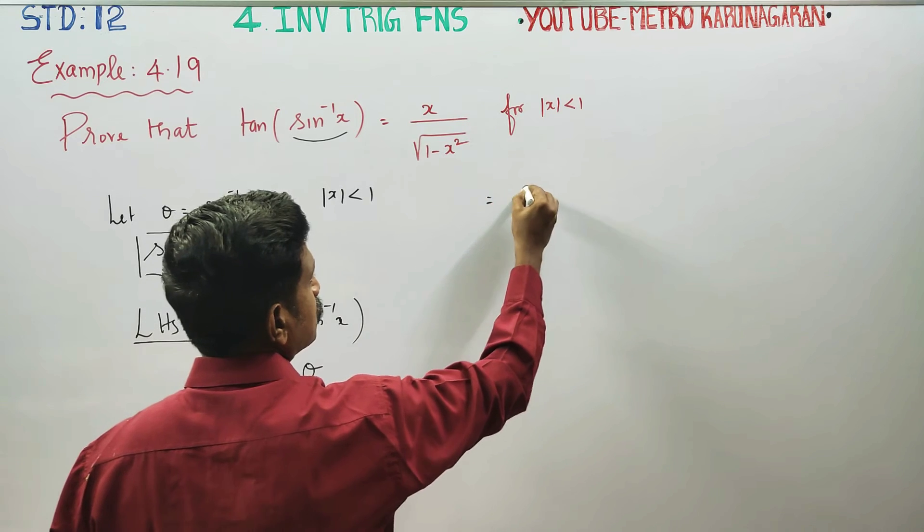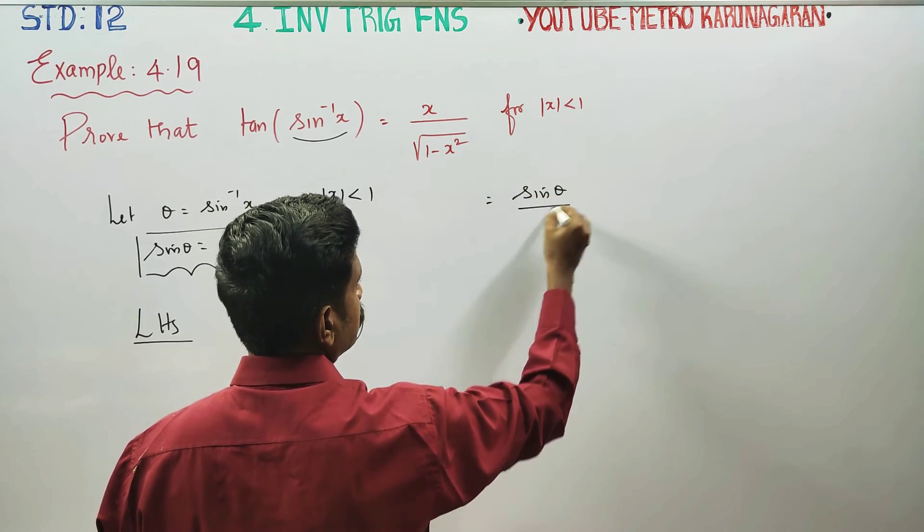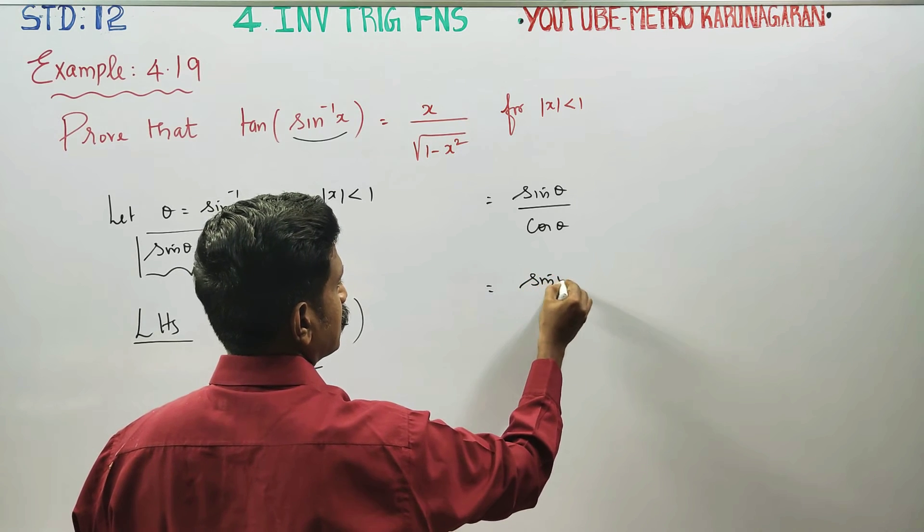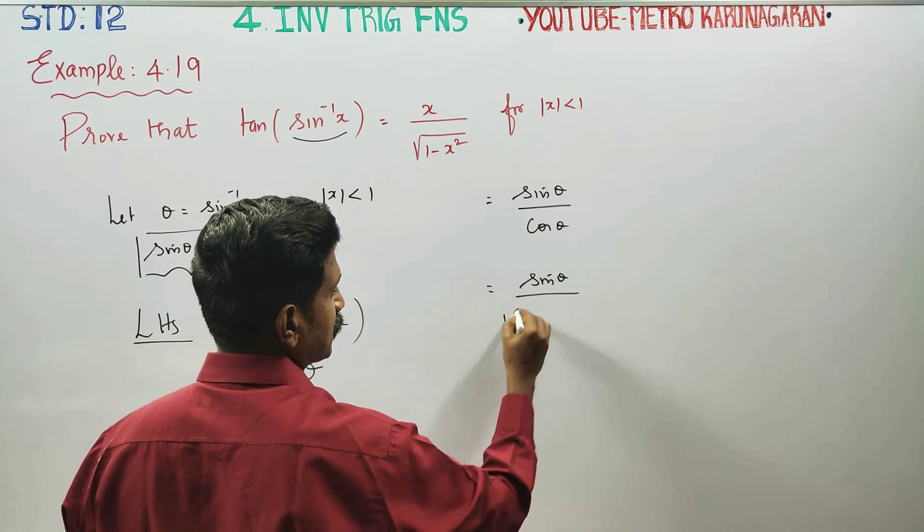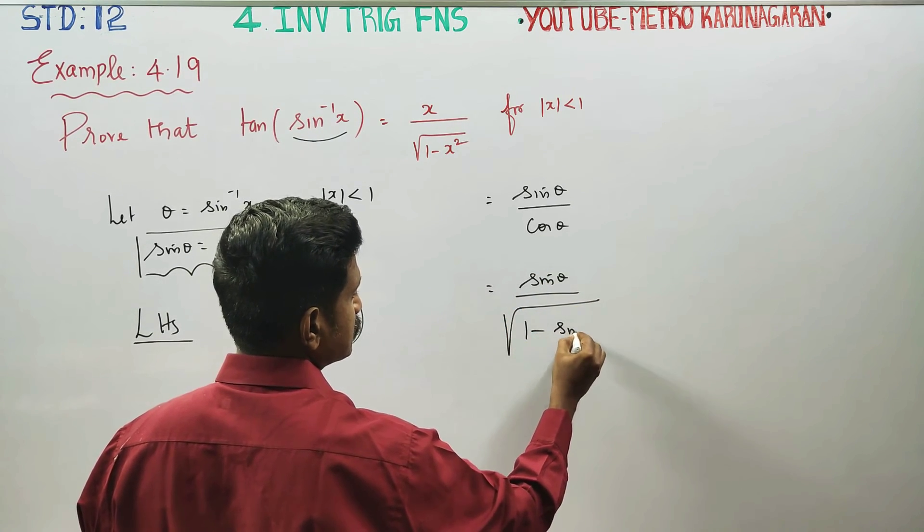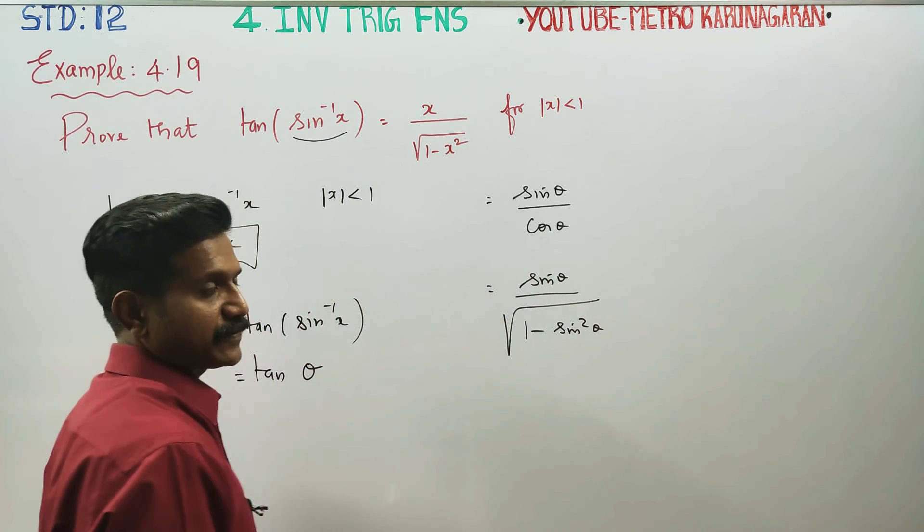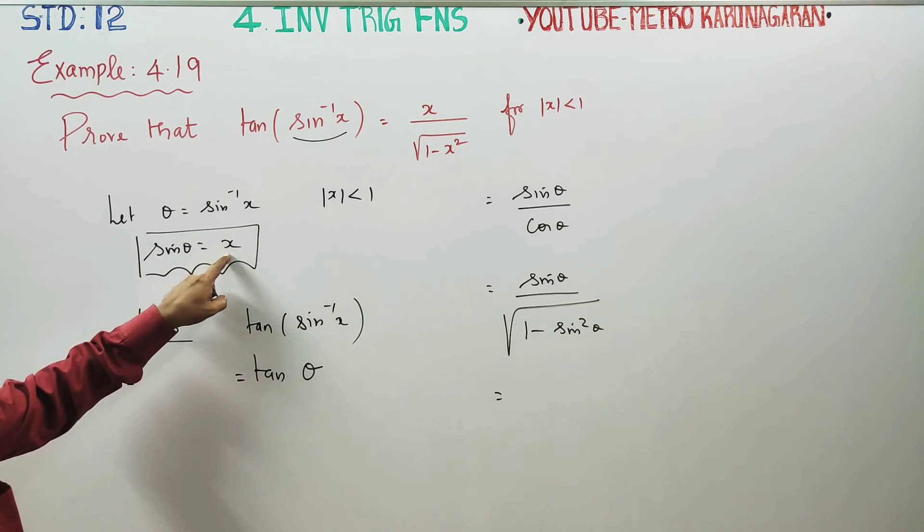Tan theta can be written as sin theta by cos theta. sin theta by cos theta can be written as 1 minus sin square theta. 1 minus sin square theta cos square theta is rooted in cos theta. sin theta is equal to value 1 minus sin theta.